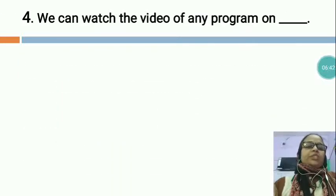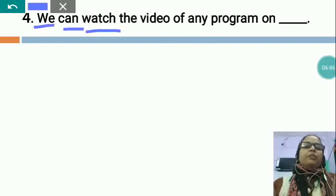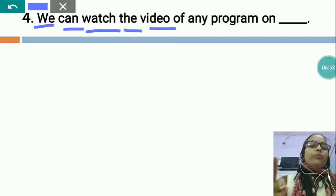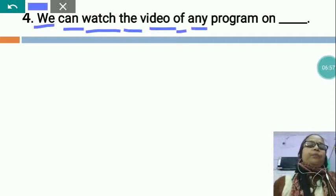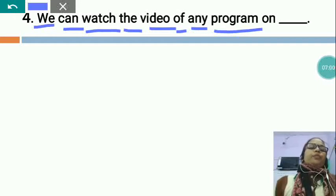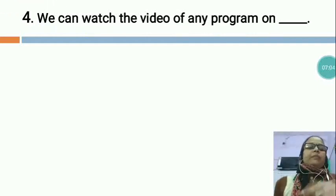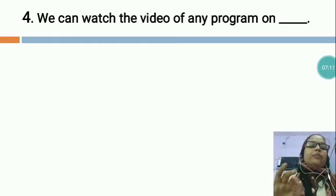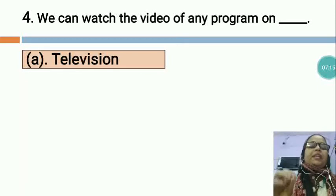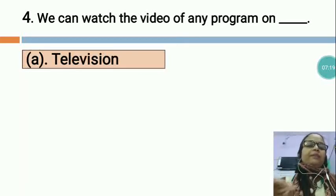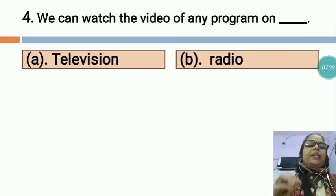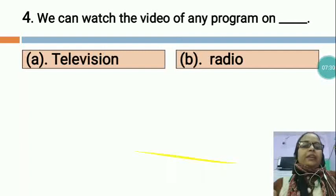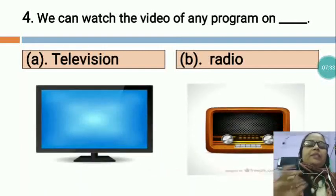Now the next question is: WE CAN WATCH THE VIDEO OF ANY PROGRAM ON ___. This is a fill-in-the-blank — you will have to write the correct word. Option A is TELEVISION and option B is RADIO. You can see the first option is television and the second is radio.